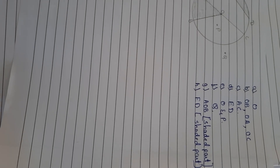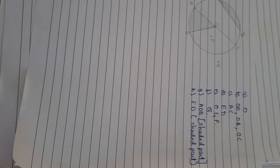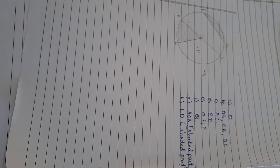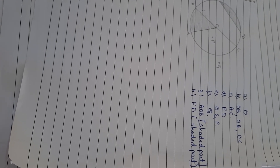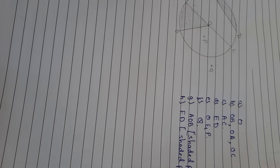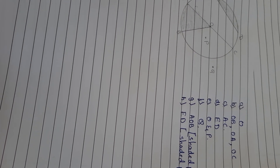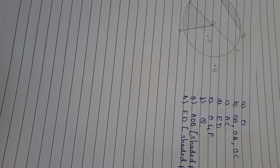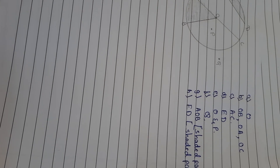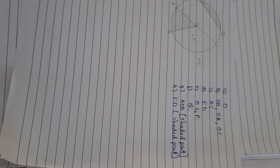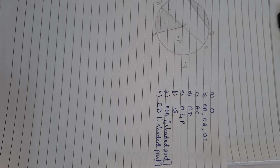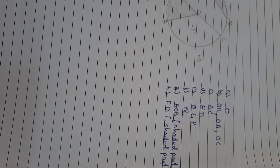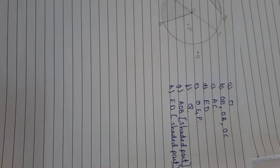Now second main, don't write that children. Directly go to third main. Third main is also the same — draw any circle and mark its center, diameter, radius, sector, segment, an arc, a point in its interior, and a point in its exterior. Fourth main says true or false.